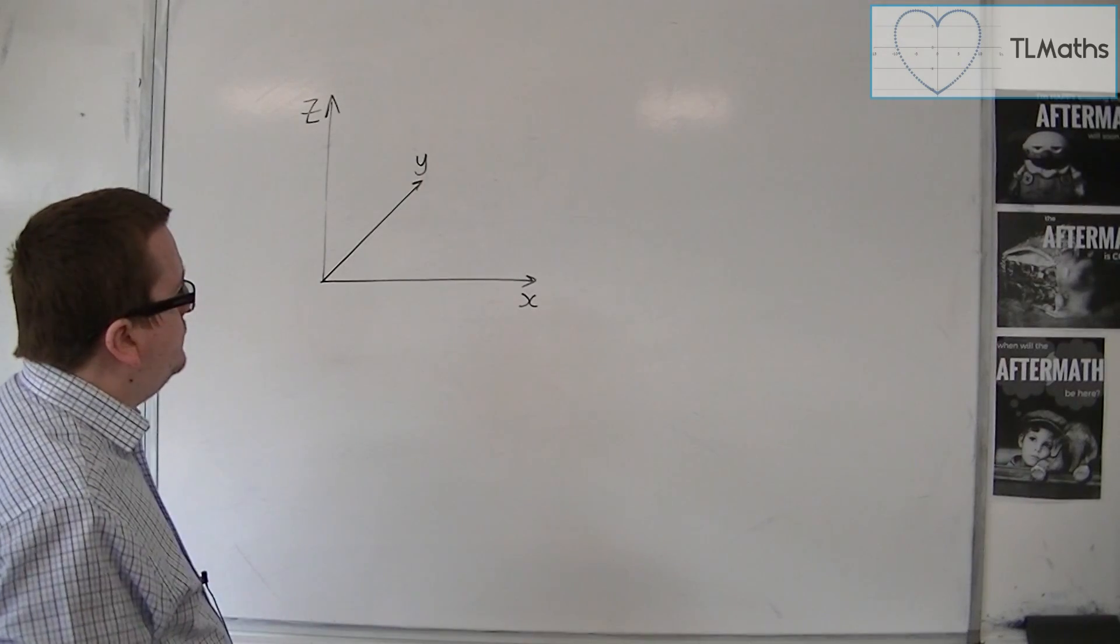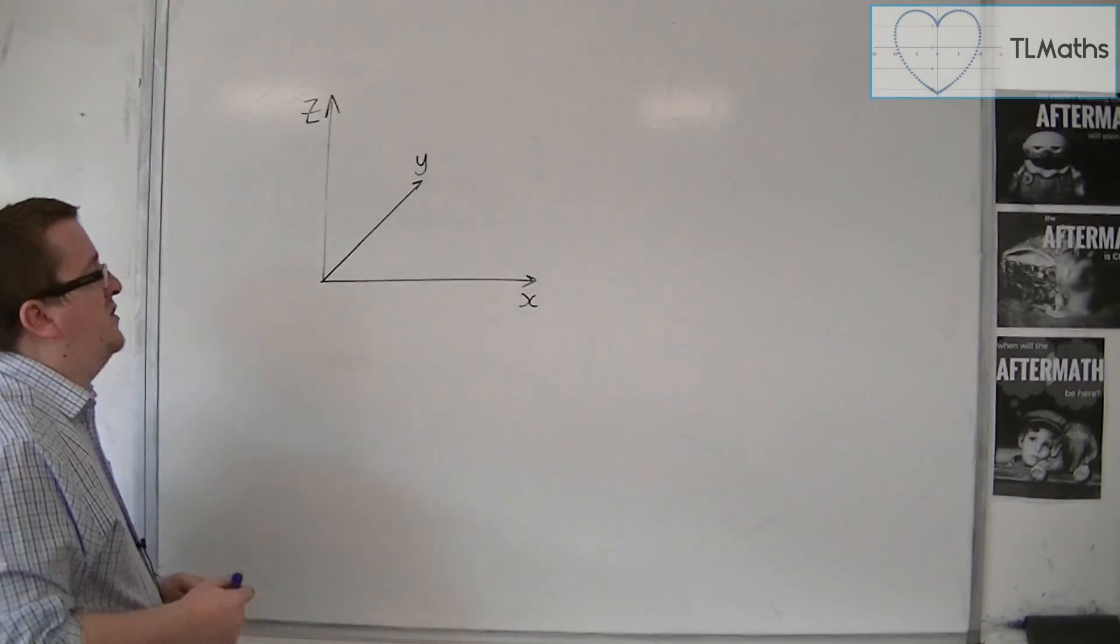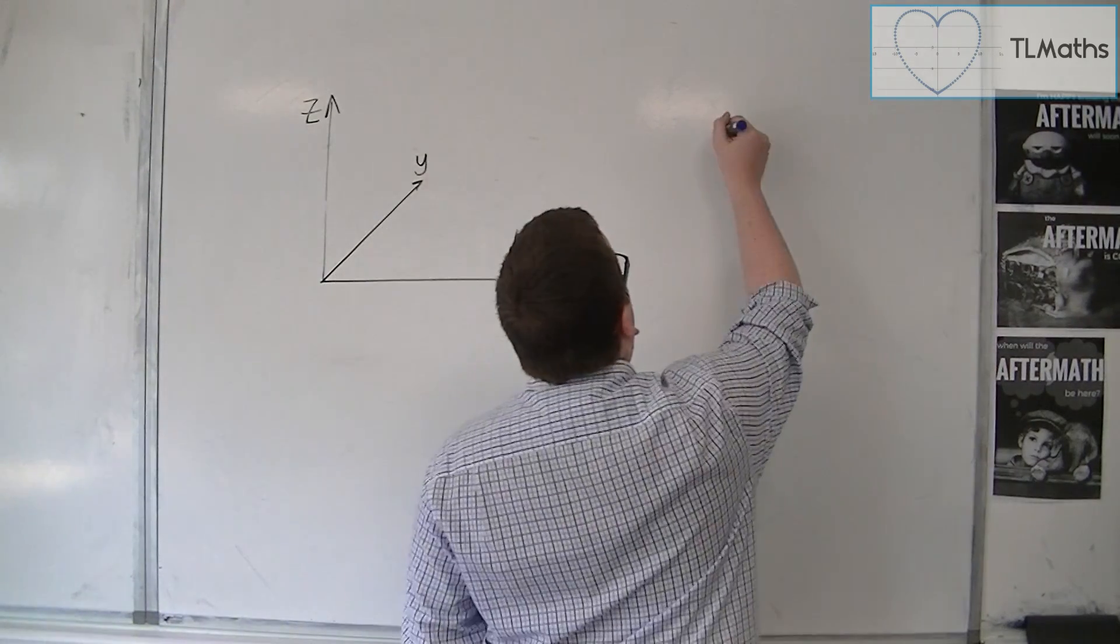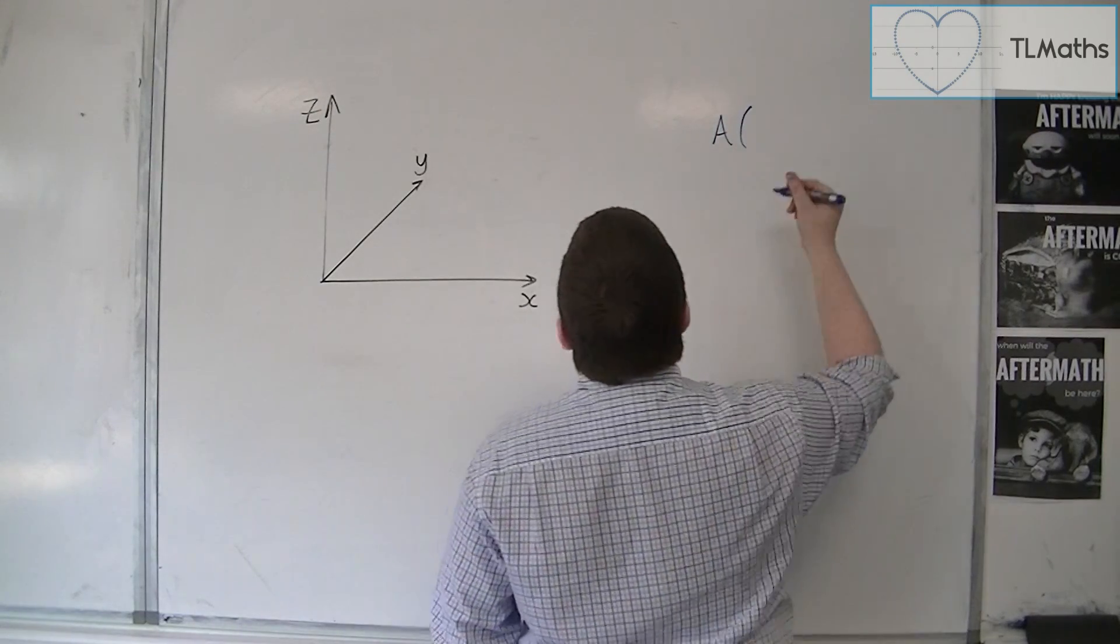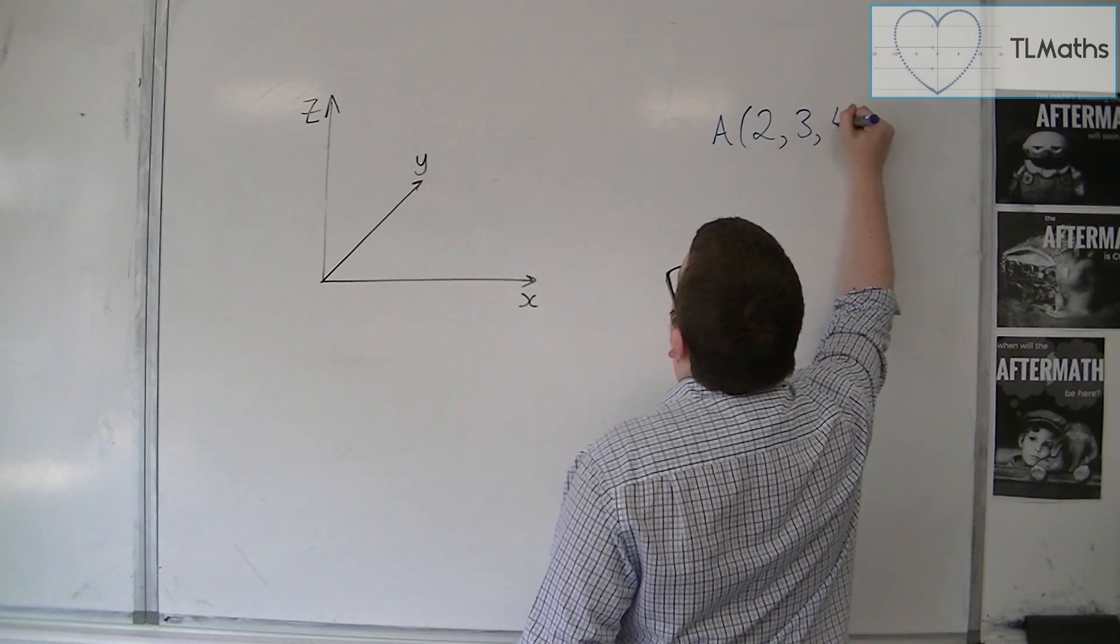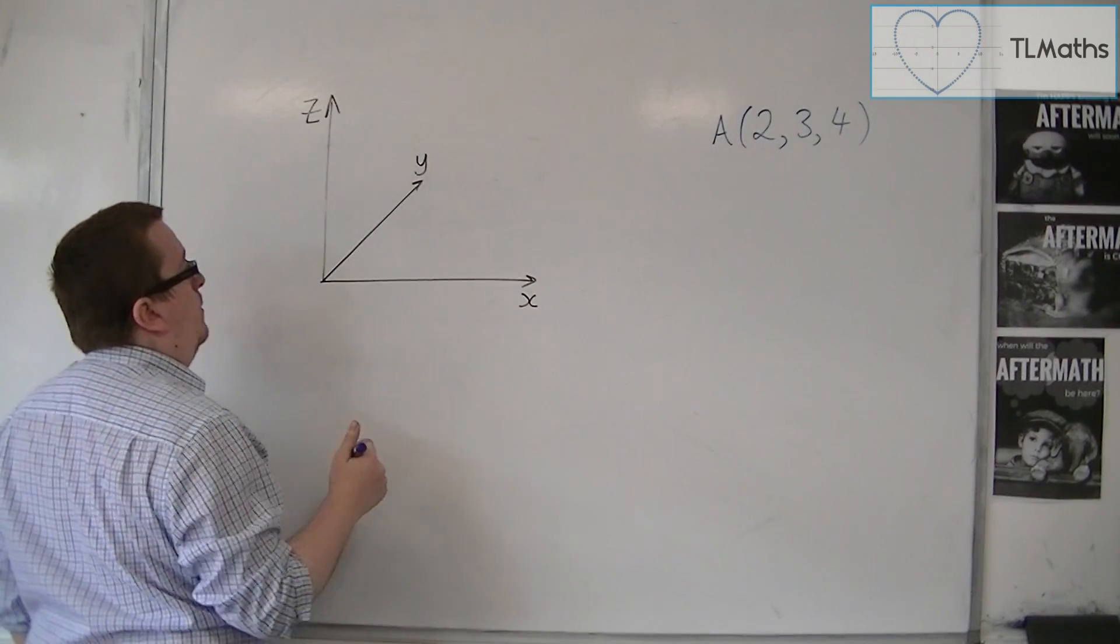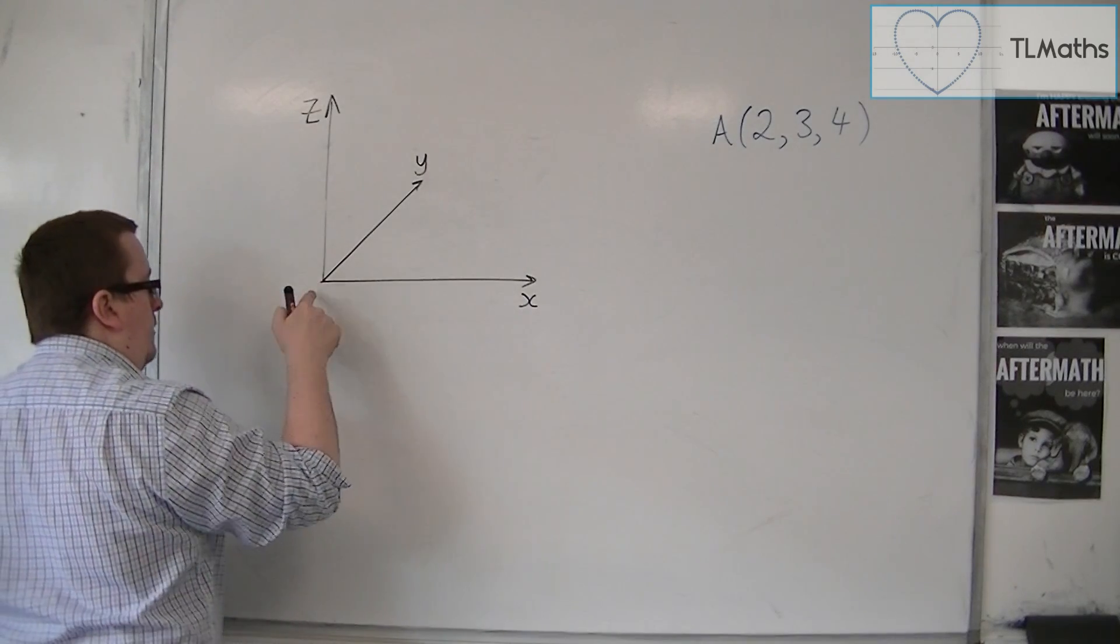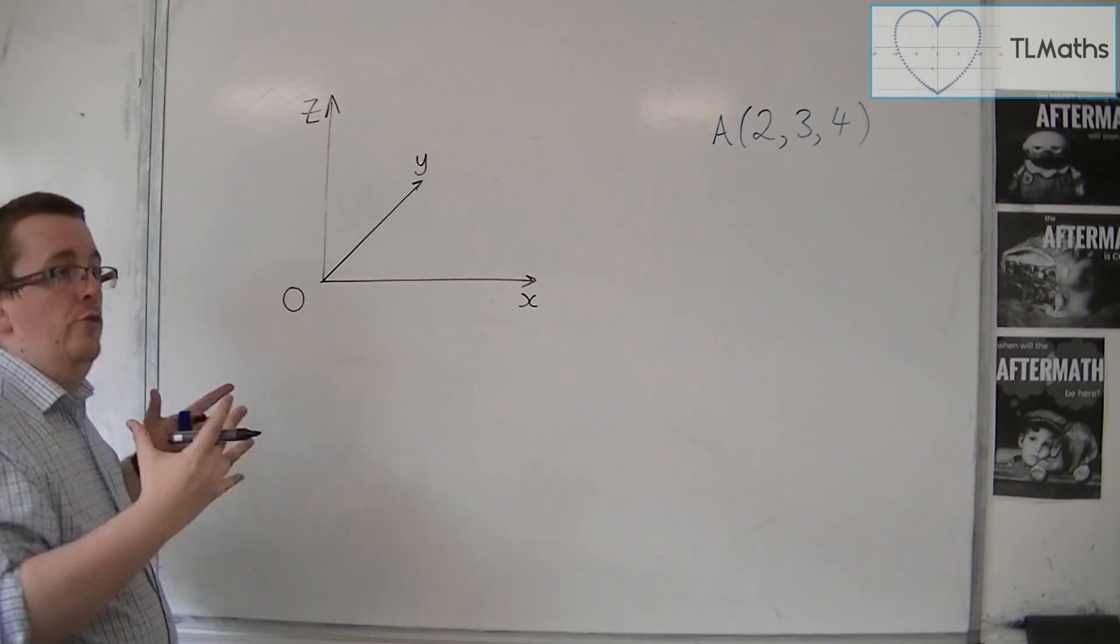So if I said that we had some coordinates in three dimensions, so let's say we had the coordinate A, which was 2, 3, 4, for example, with respect to some origin. So the origin that we call this point here is O, which is 0, 0, 0.